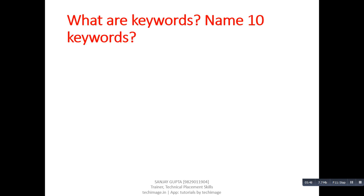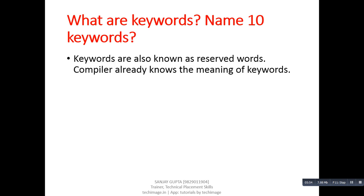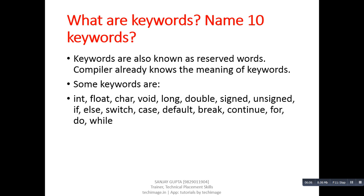Next question: what are keywords? Name ten keywords. Answer: keywords are also known as reserved words; the compiler already knows the meaning of keywords. Some keywords are: int, float, char, void, long, double, signed, unsigned, if, else, switch, case, default, break, continue, for, do, and while.